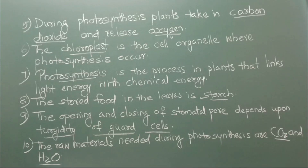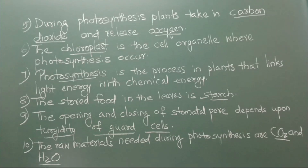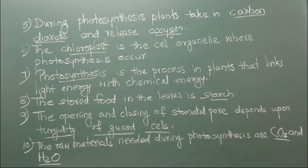Number 5: During photosynthesis, plants take in blank and release blank. The answer is carbon dioxide and oxygen. Number 6: The blank is the cell organelle where photosynthesis occurs. The answer is chloroplast.